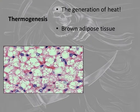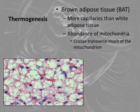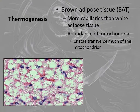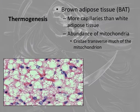One of the reasons why it appears darker actually has to do with the capillaries involved. There are many more capillaries going to the brown adipose tissue than the white adipose tissue. Some would also argue that there are just lots of mitochondria, especially compared to white adipose tissue which has very little. The cristae transverse much of the mitochondrion - what does that mean? What is the cristae?